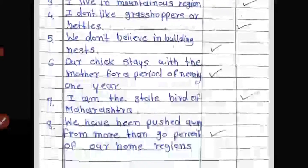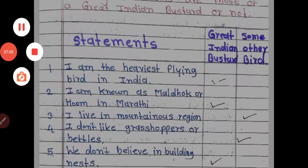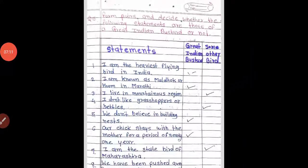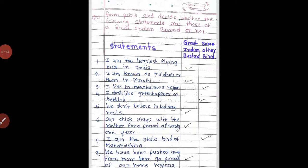Statement 7: 'I am the state bird of Maharashtra' — this belongs to another bird, because the Great Indian Bustard is the state bird of Rajasthan, and it lives in the desert. Statement 8: 'We have been pushed away from more than 90 percent of our home region' — this also matches the Great Indian Bustard. With that, we have finished our exercise with all the correct answers. Please subscribe to our channel, like it, and share it. Thank you.